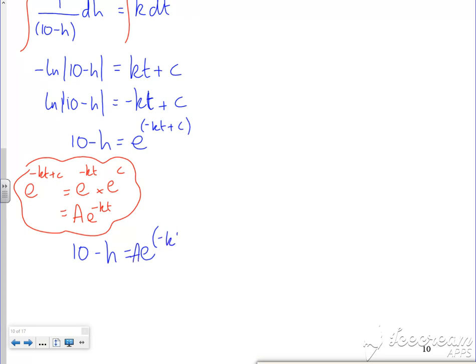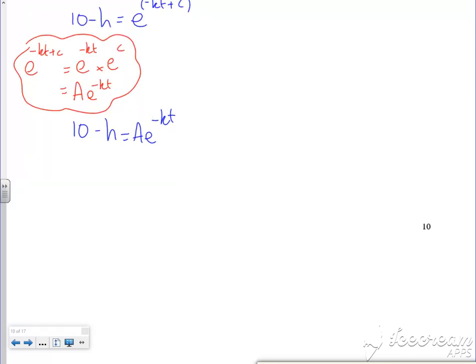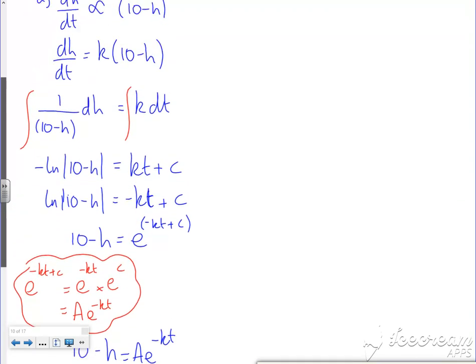So Ae^(-kt). A tiny bit of rearranging now. If I rearrange for h, I get h = 10 - Ae^(-kt). And that's your general solution with h in terms of t.